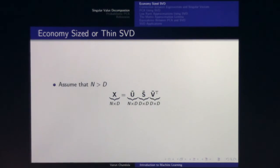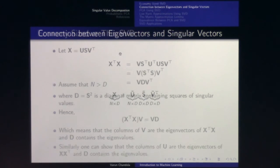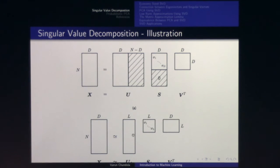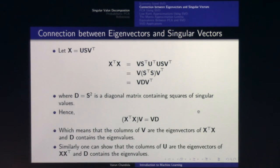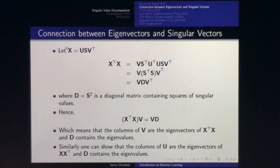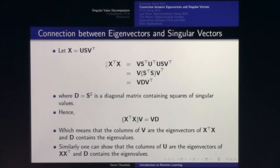Now: what is SVD's relationship to PCA? We assume n > d. Given the SVD decomposition x = U S V^T, let's look at the covariance. Covariance is given by X^T X — ignoring the 1/n factor and assuming the data is already centered so there's no x minus mu term.